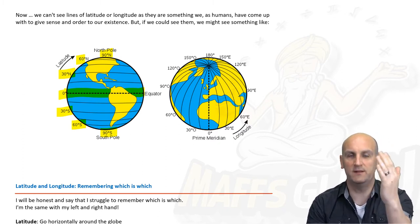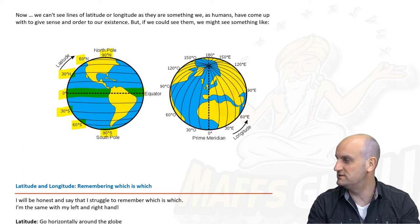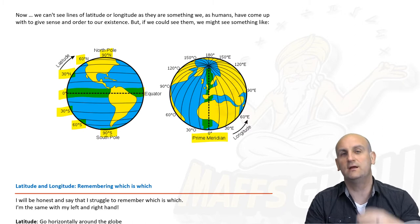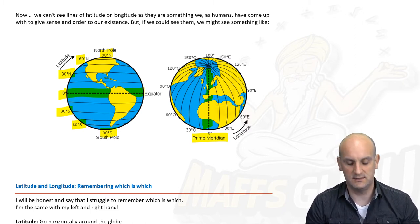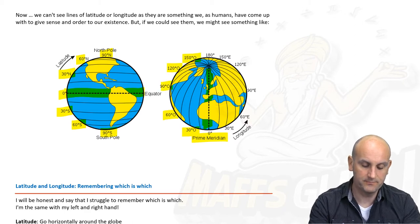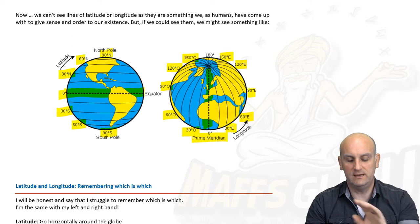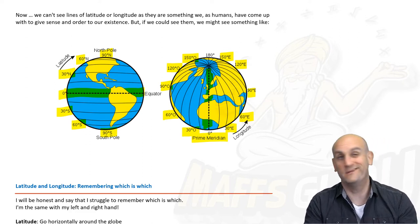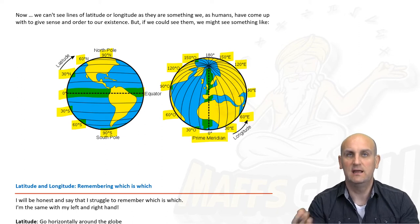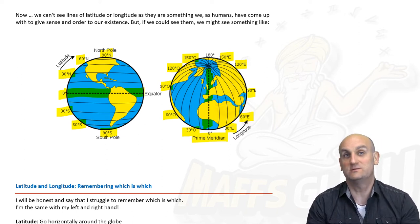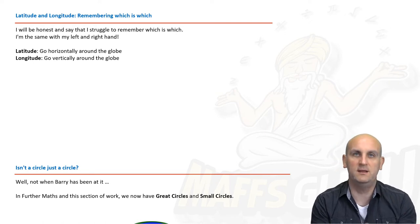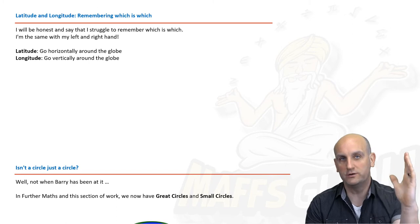Longitude lines actually split the Earth into segments — think of a Terry's chocolate orange. There is a prime meridian, the line that goes through Greenwich in the United Kingdom, which is really important internationally. Lines of longitude are given degrees east or west. So please write it in your summary book: latitude is across, longitude is up and down.